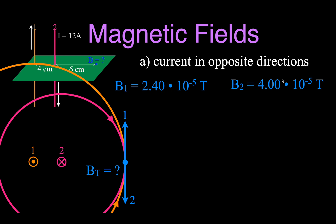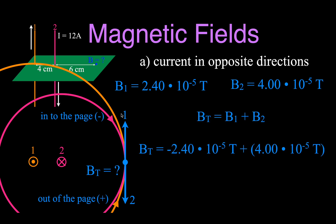The magnetic field from wire number two now flows in the clockwise direction, meaning at that point it flows in the opposite direction — out of the page, which is positive. So we add them: wire one is into the page (negative), wire two is out of the page (positive). That gives −2.40×10⁻⁵ plus +4.0×10⁻⁵ = +1.60×10⁻⁵ teslas. You could also write 'out of the page' to indicate the direction. That's the magnetic field strength at that point from the two wires when the currents flow in opposite directions.